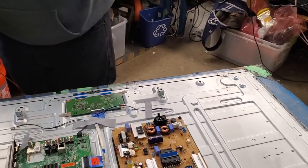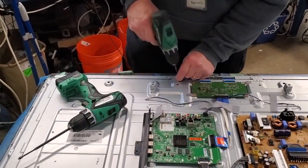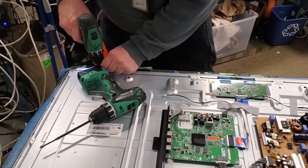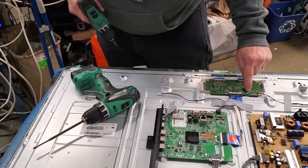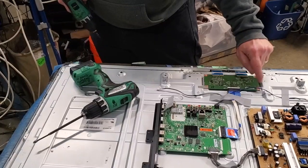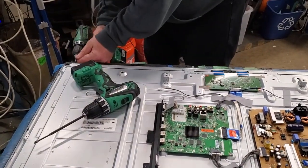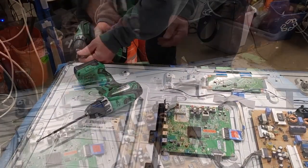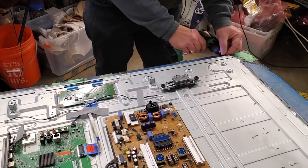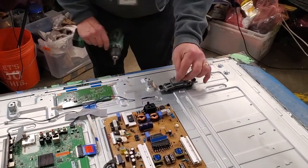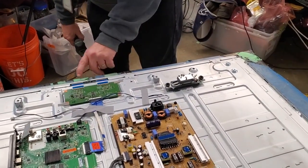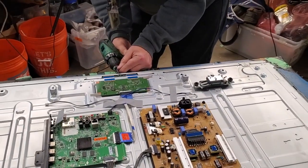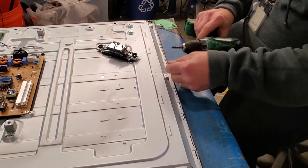Remove the screws on the metal shields over the buffer boards. Remove the metal screws on the covers over the scan drive boards. Remove the screws around the TV.